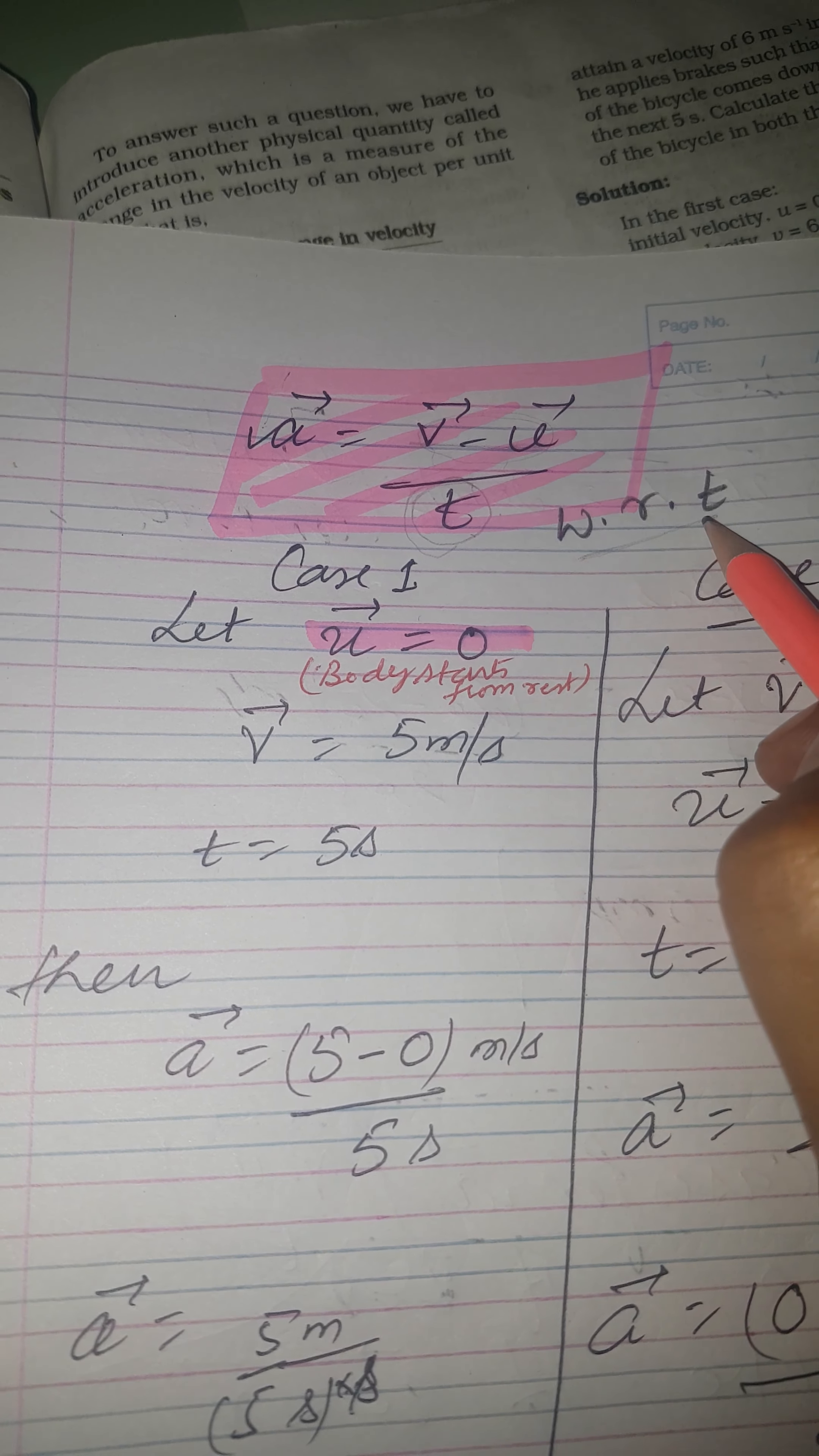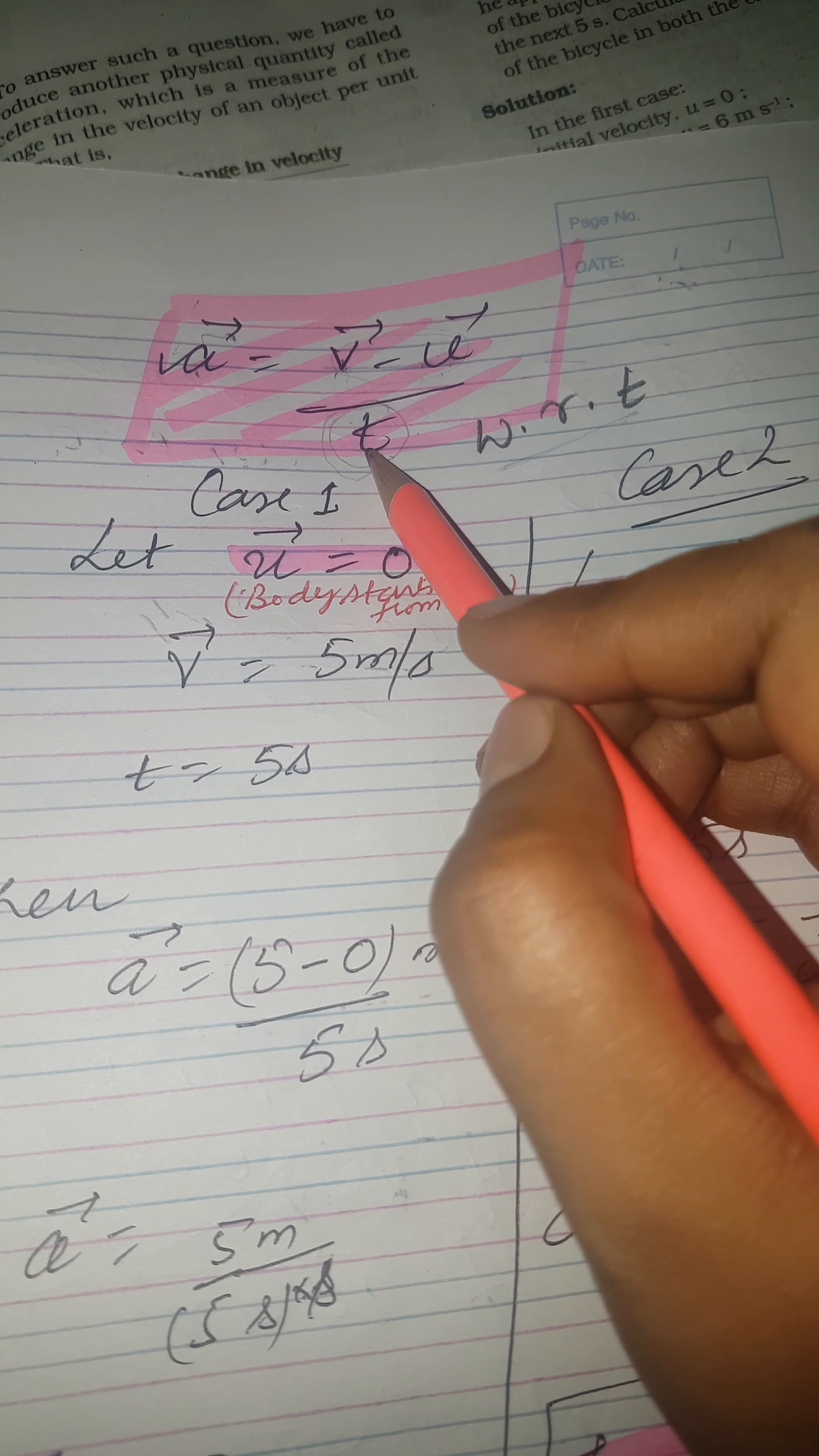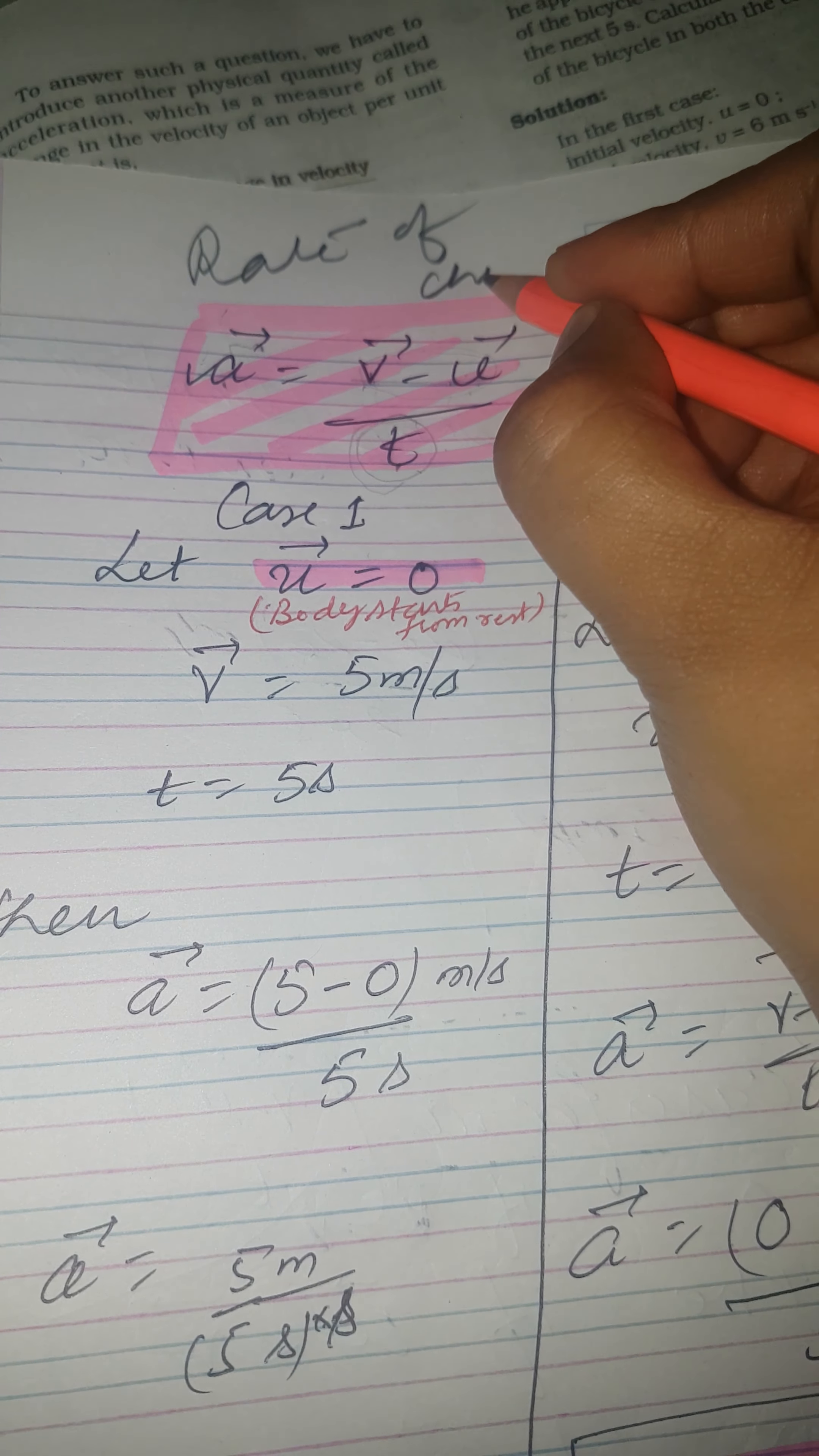So v minus u, this is change in velocity from u to v. The body has acquired some velocity during its motion, and t is for rate. So acceleration is rate of change of velocity.